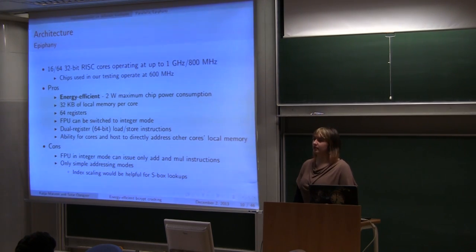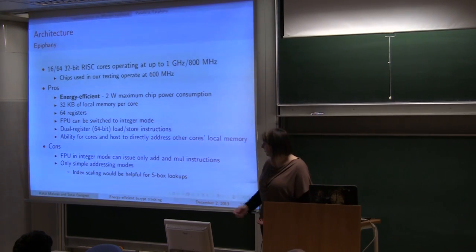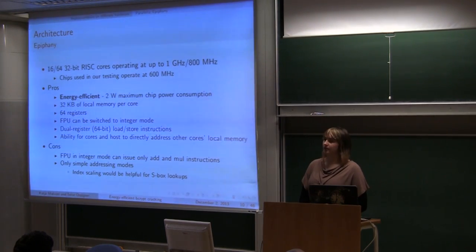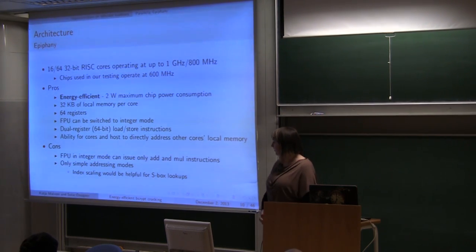There are also some problems because FPU in integer mode can execute only add and multiply instructions. And for Bcrypt, we need XORs and shifts and stuff like that. So more logical than arithmetic instructions. Problem is also there are only simple addressing modes. So we need to use more registers than for example on x86 architecture where there are index scalings.